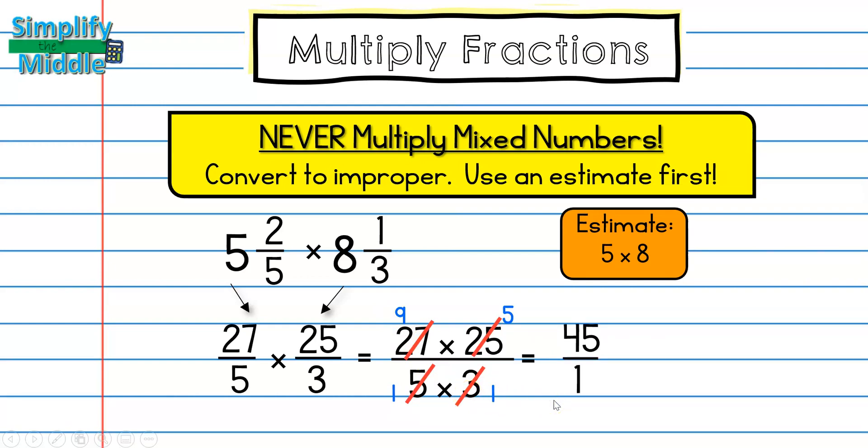And remember, we said that anytime that you have cut something into only one piece, you essentially haven't cut it at all. So the answer here is 45 whole. My estimate was 40 and my answer is 45. So that makes sense.